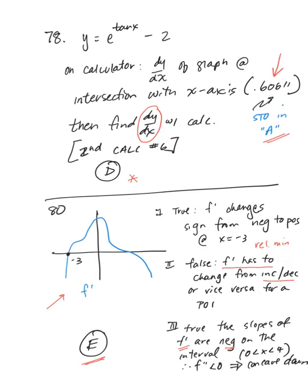Number 78 is a calculator problem. We put e to the 10x minus 2 into the calculator, find its intersection with the x-axis at approximately 0.60611, and store that in alpha A. Then using the calculator — second calc number 6 — we find dy/dx, and that gives us choice D.